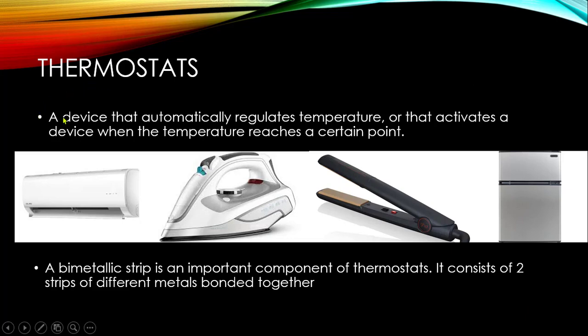Thermostats. A thermostat is a device that automatically regulates temperature or that activates a device when the temperature reaches a certain point. So thermostats essentially control your temperature. You don't want your AC getting too cold or your fridge getting too cool or even your flat iron or your heater. You don't want them getting too hot. So there is a certain device in all of these appliances called a thermostat, which helps to regulate a certain temperature. A bimetallic strip is an important component of thermostats. It consists of two strips of different metals bonded together.